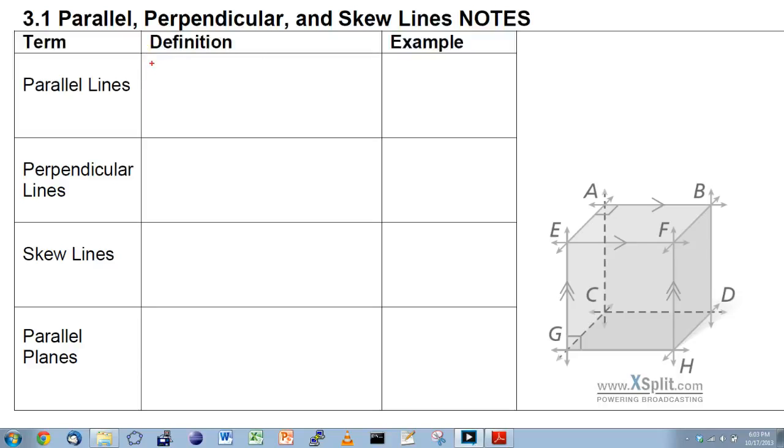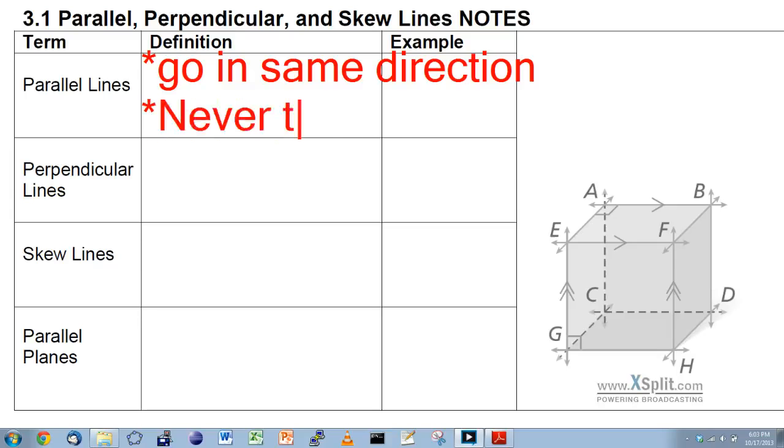So parallel, first off, right off the bat, parallel, plain and simply, there are two lines that go in the same direction. They never touch, and they remain what are called equidistant. Equidistant means lines don't get closer or farther away.